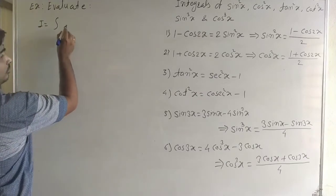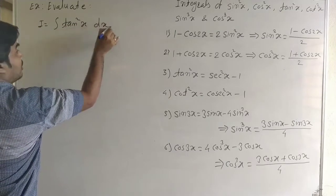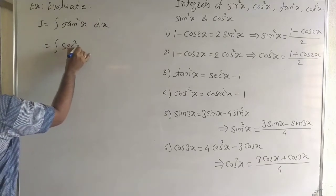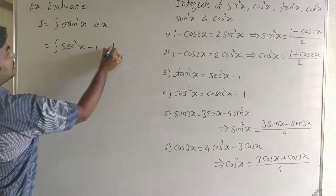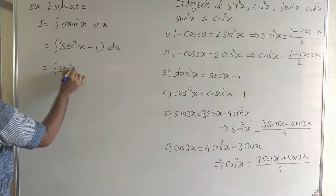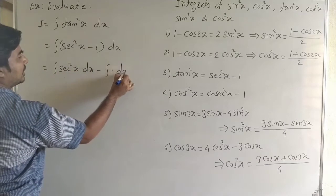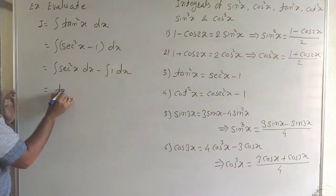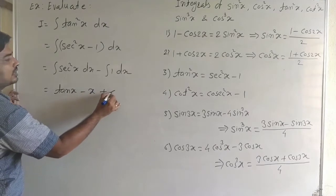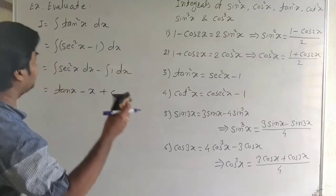Integral of tan²x dx: first use the formula tan²x = sec²x − 1. So the integral becomes ∫(sec²x − 1) dx. Separating: ∫sec²x dx − ∫1 dx. The integral of sec²x is the standard form, giving tan x − x + C. This is the integral of tan²x.